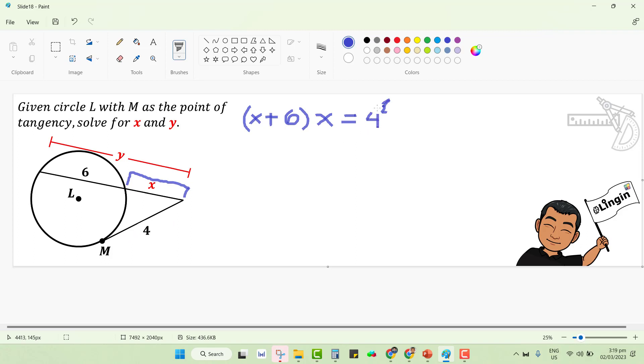This is by tangent-secant power theorem, which again tells us that the product of the measurements of the entire secant segment and its exterior segment is equal to the square of the tangent segment drawn on the same exterior point where the secant segment originated towards the point of tangency. So from here, we could come up with this equation: x squared plus 6x is equal to 16.